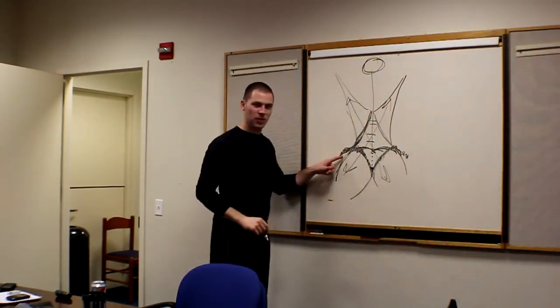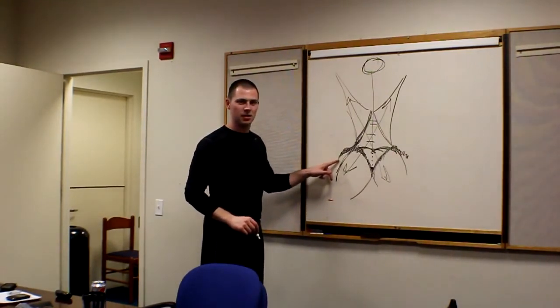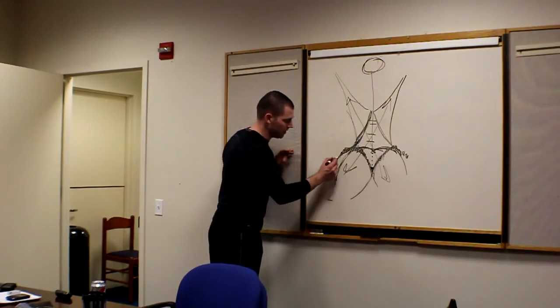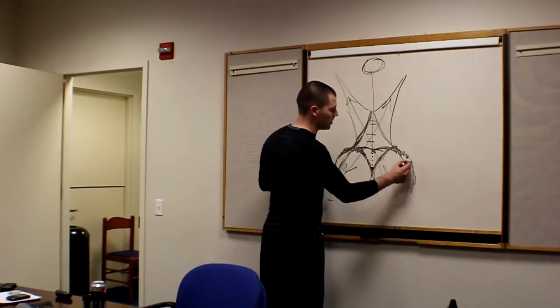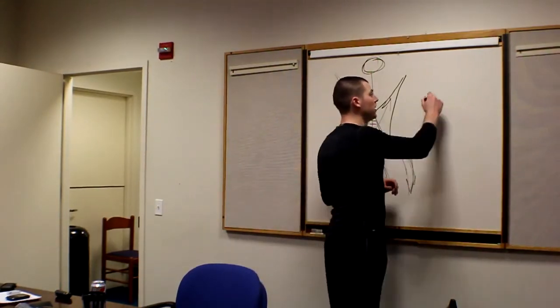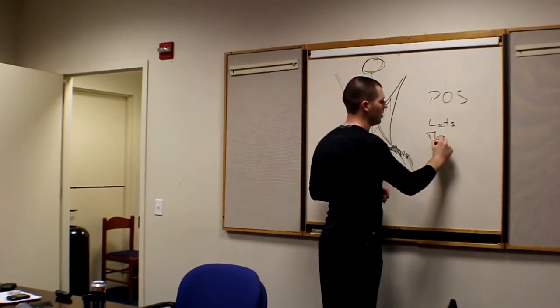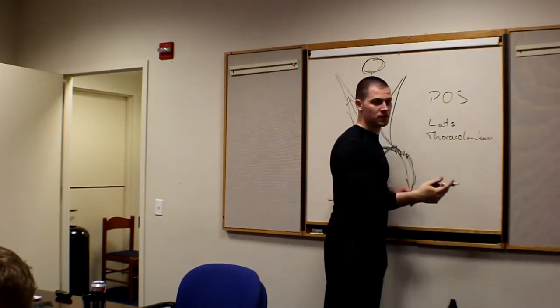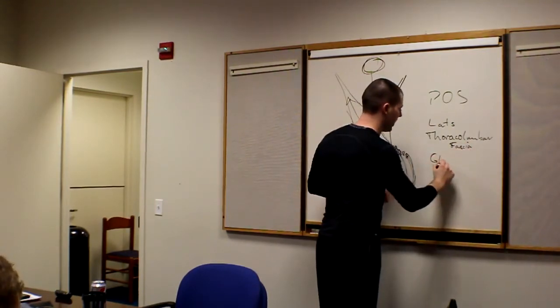Guess what attaches right here? We're on the posterior end. If you ask me, this is my observation. This will be in the new subsystem articles in 2013. Your POS is lats, thoracolumbar fascia. You might see the word aponeurosis. Glute max.